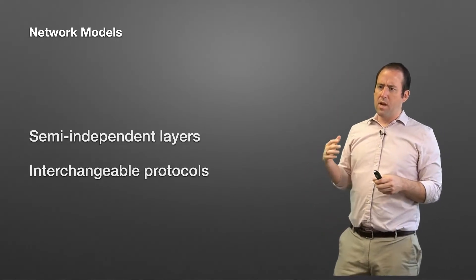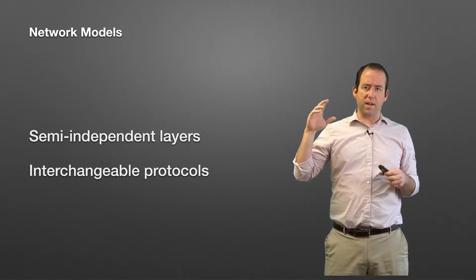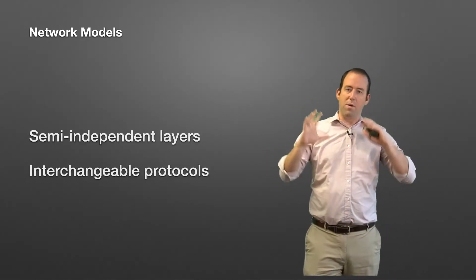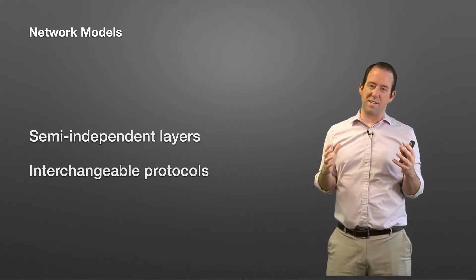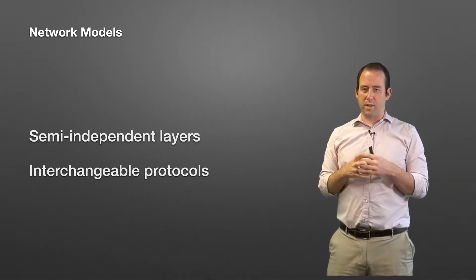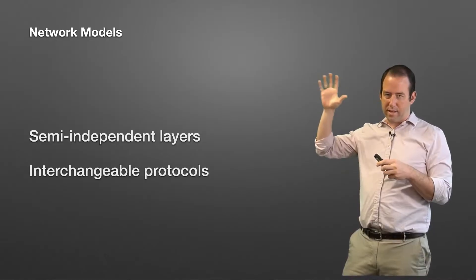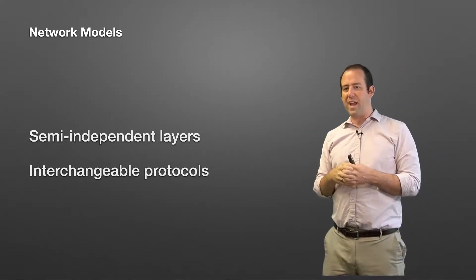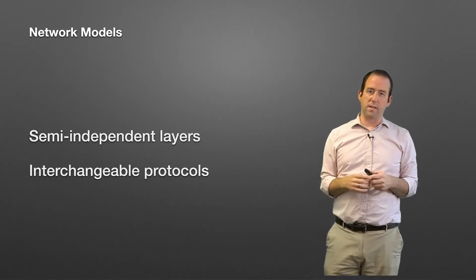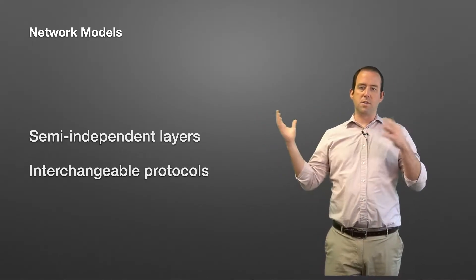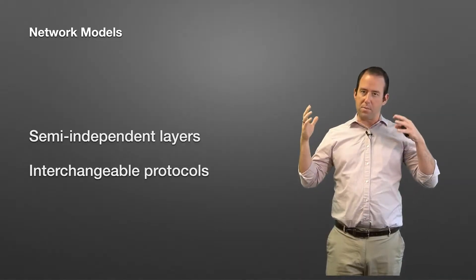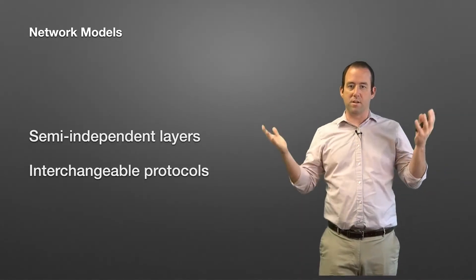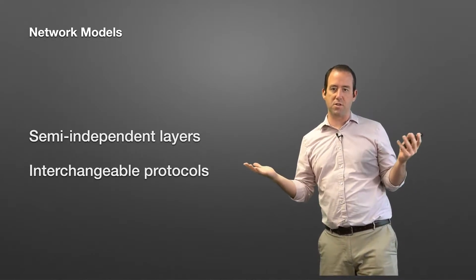So in networking models, we have kind of semi-independent layers. I call them semi-independent because as we talk about how all the pieces fit together, you're going to realize that they're not as independent as it looks or as we like to say they are. But these layers are independent of each other a little bit, mostly. And that makes them interchangeable, like I said before. So TCP and UDP are two different protocols that we'll talk about, and each of them is interchangeable with the other as long as it fits the needs of whatever application you're working on.